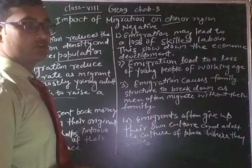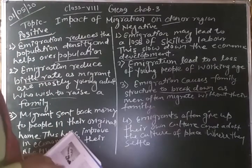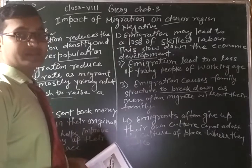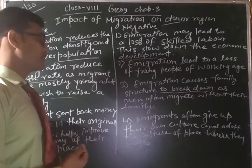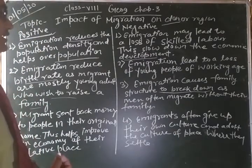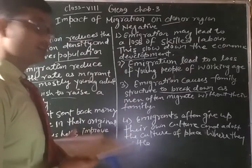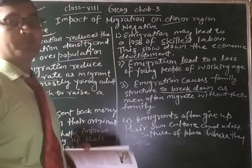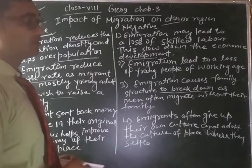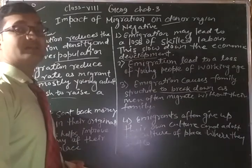Immigration also causes family structure to break down. Generally, males go to other countries while their families remain in the native places. This breaks down the family structure — the proportion of men decreases and the proportion of women increases.